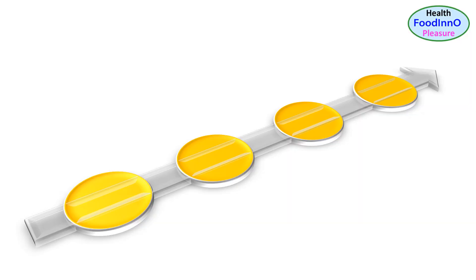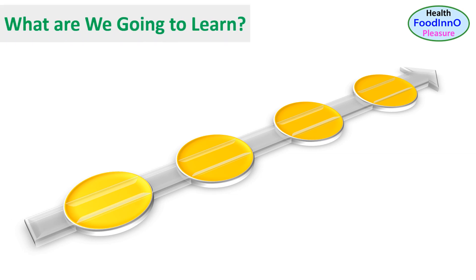In order to understand any food preservation method, we need to understand what is food preservation, food processing, unit process, and unit operations. In this video, I am going to explain each of these aspects with selected examples. First, we need to understand what is food preservation — it is an action or way to maintain foods at desired properties for a desired period.